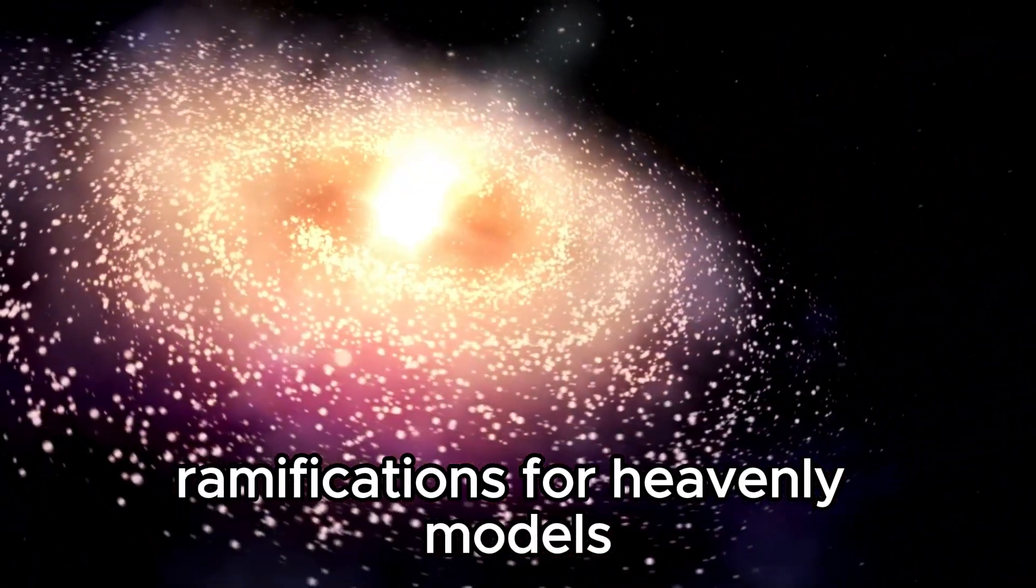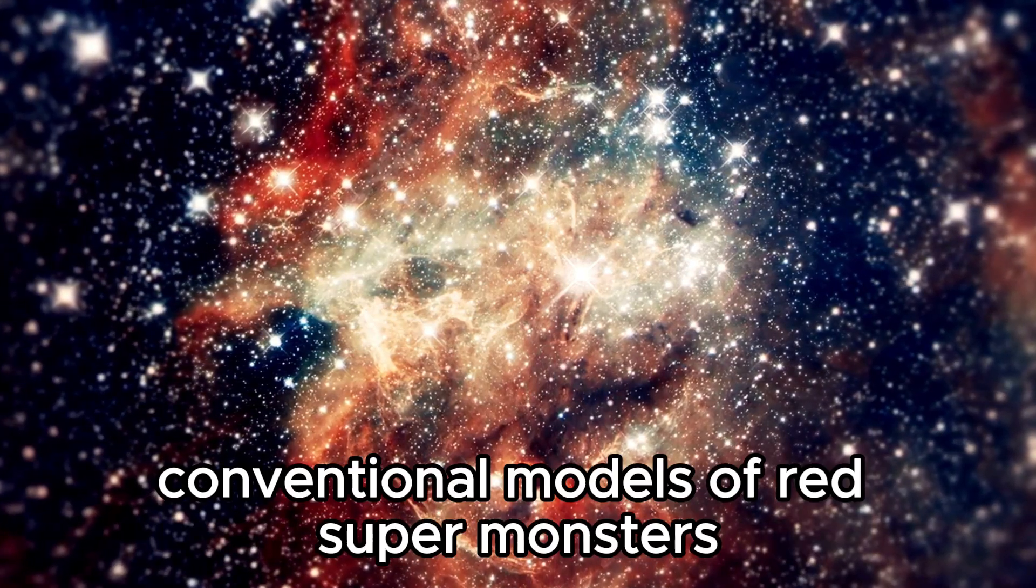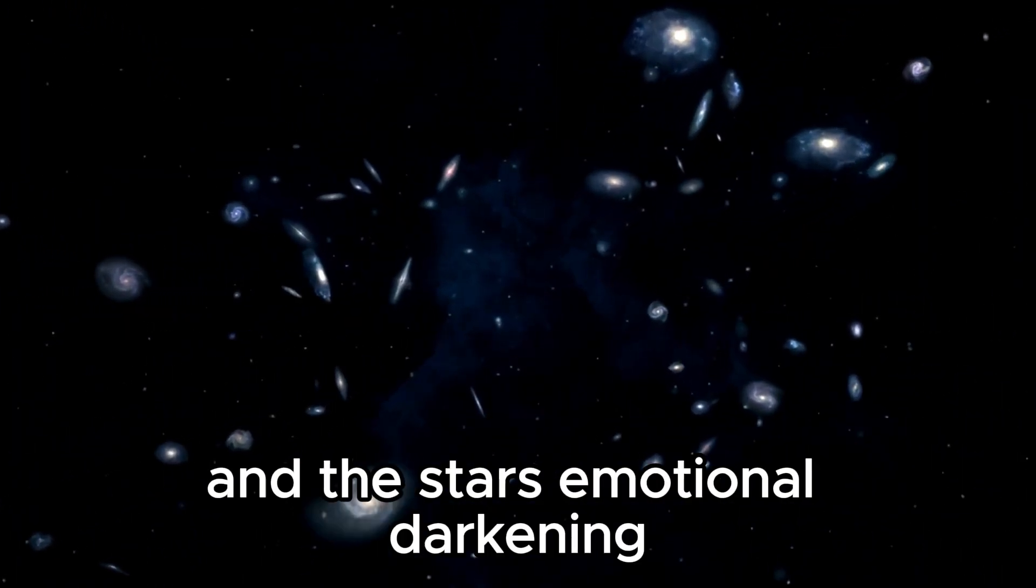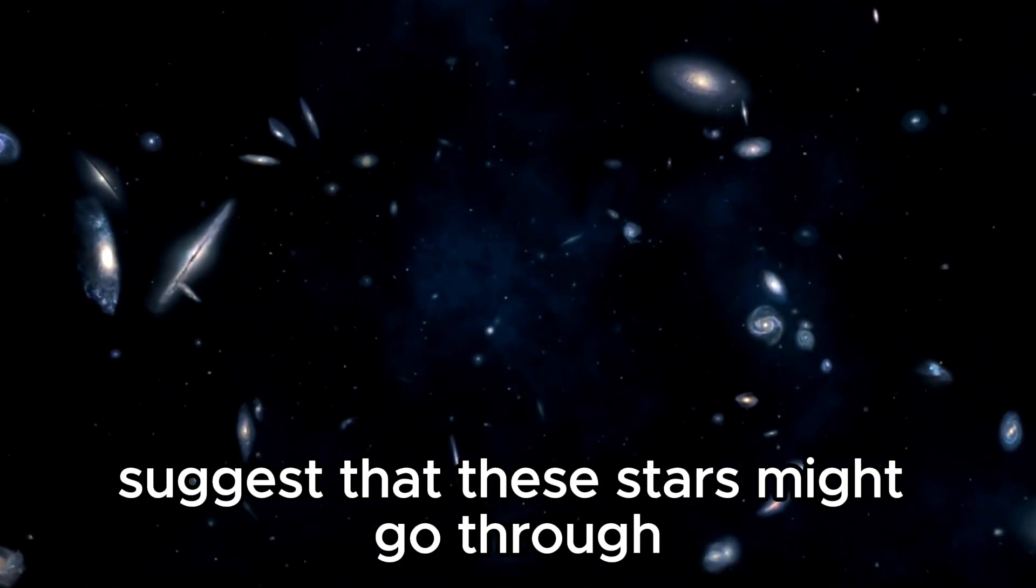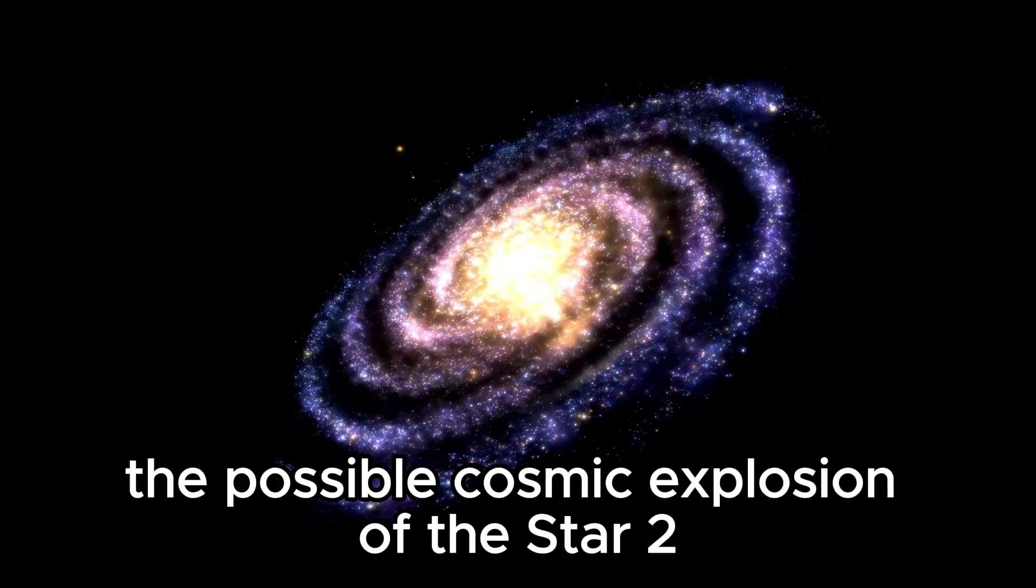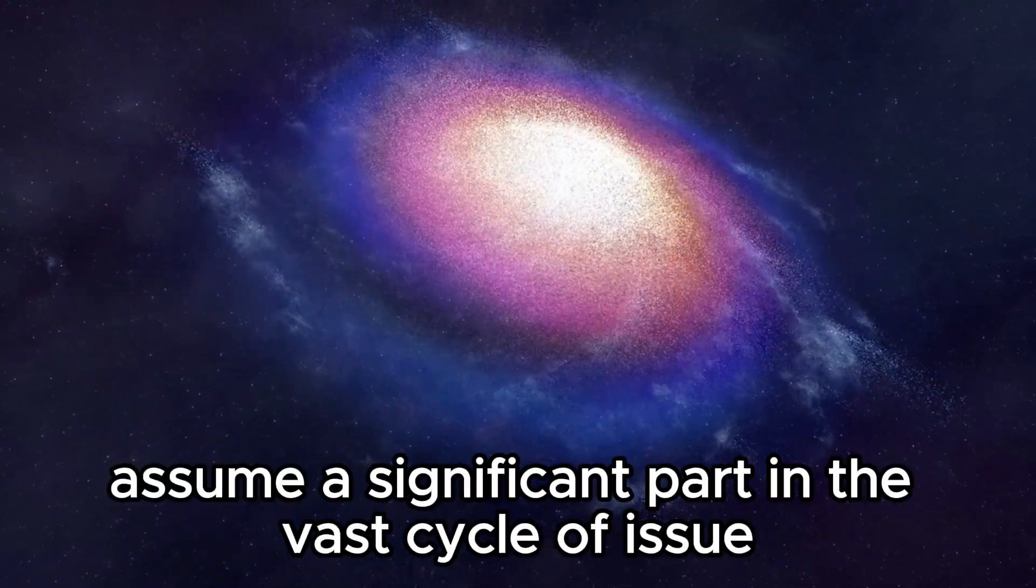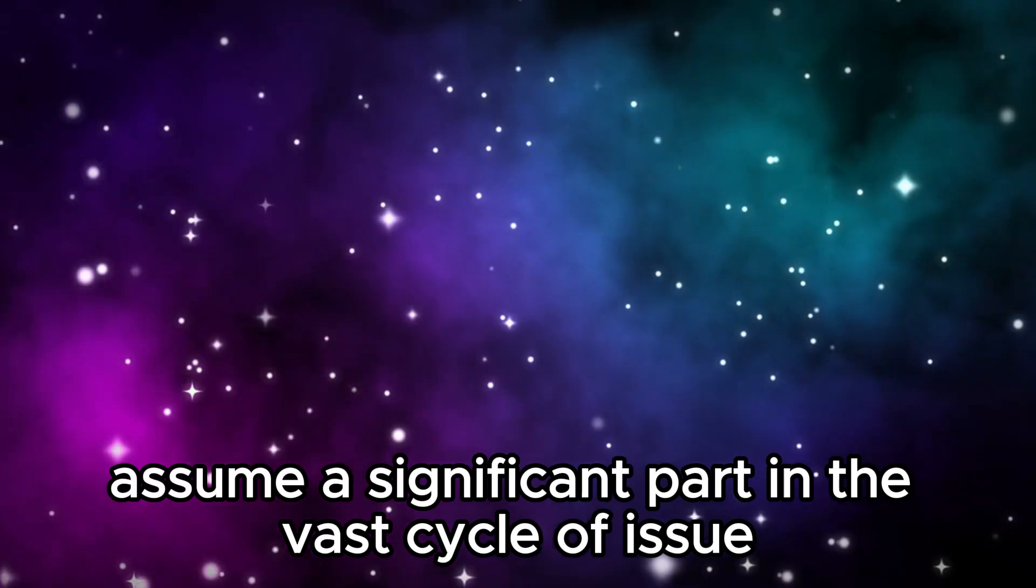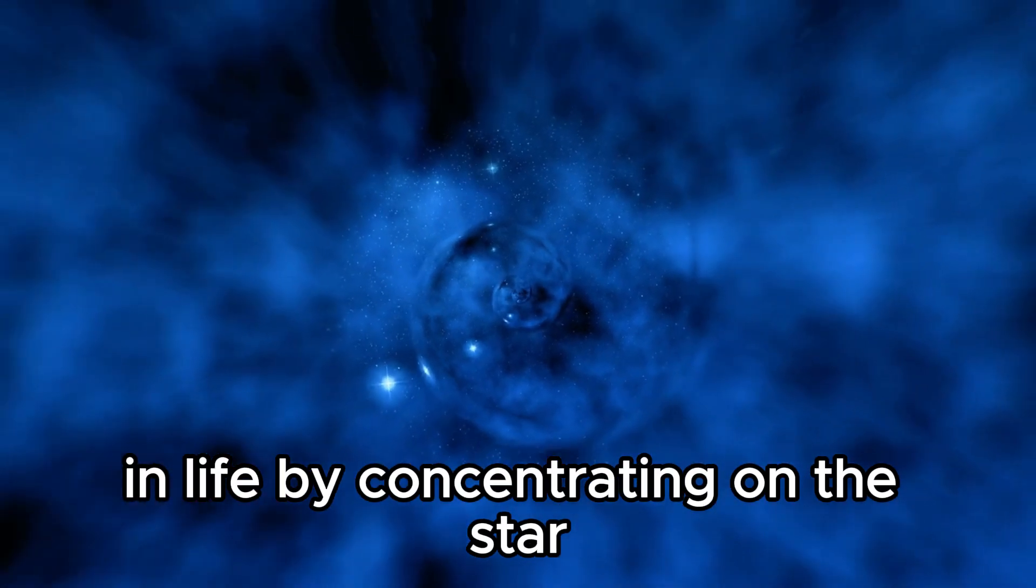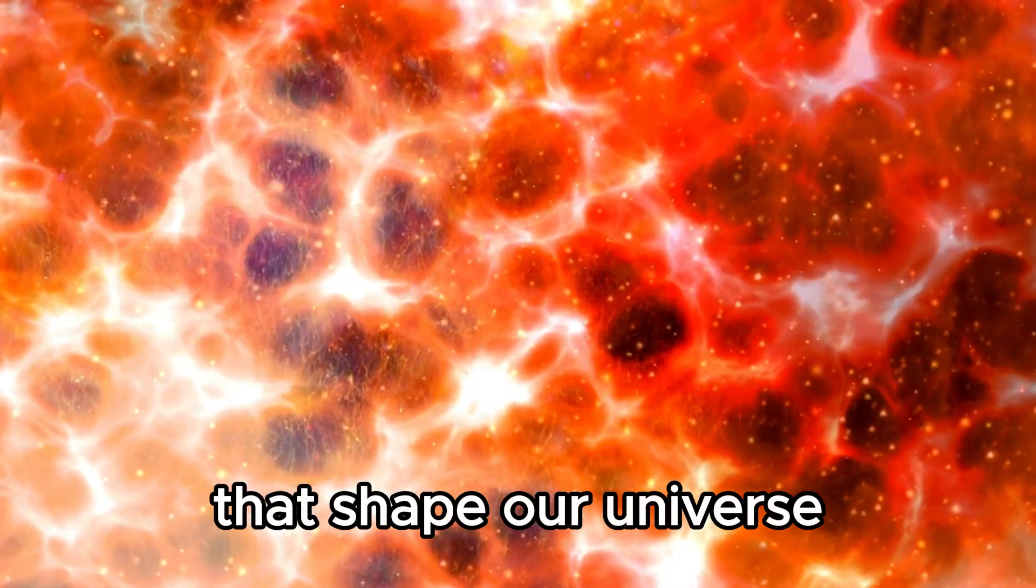Implications for stellar models: The information gathered from the perceptions of this red supergiant is currently impacting stellar models. Conventional models of red supergiants and their life cycles are being rethought considering the new discoveries. The unforeseen mass launch and the star's emotional darkening suggest that these stars might go through more unpredictable and rough changes than recently thought. The potential supernova of this star also has more extensive ramifications for our comprehension of the universe. Supernovae assume a significant part in the vast cycle of matter. They are responsible for making and scattering components heavier than iron, which are fundamental for the development of planets and life.